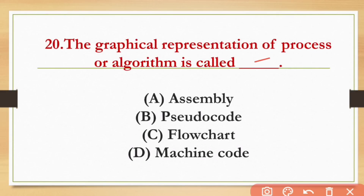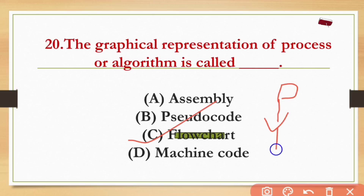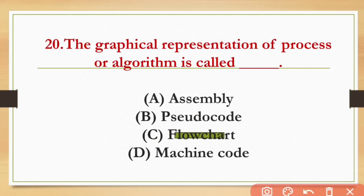The graphical representation of a processor algorithm is called — the options are Assembly, Pitch Code, Flowchart, and Machine Code. The answer is Flowchart. A flowchart is the graphical representation of an algorithm.